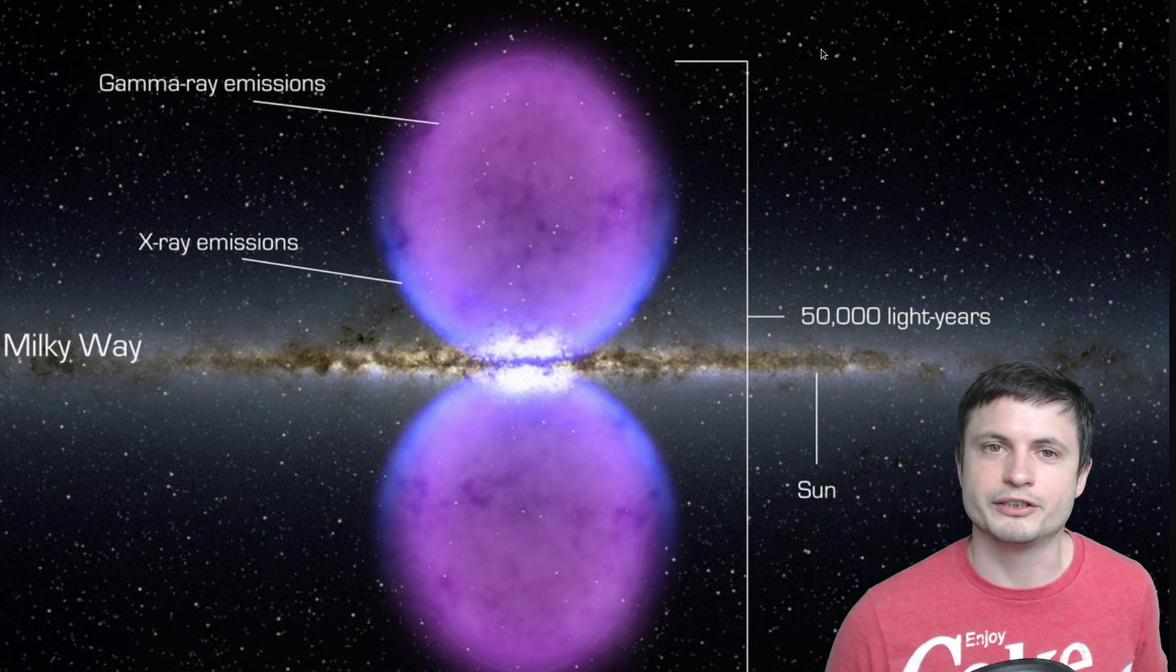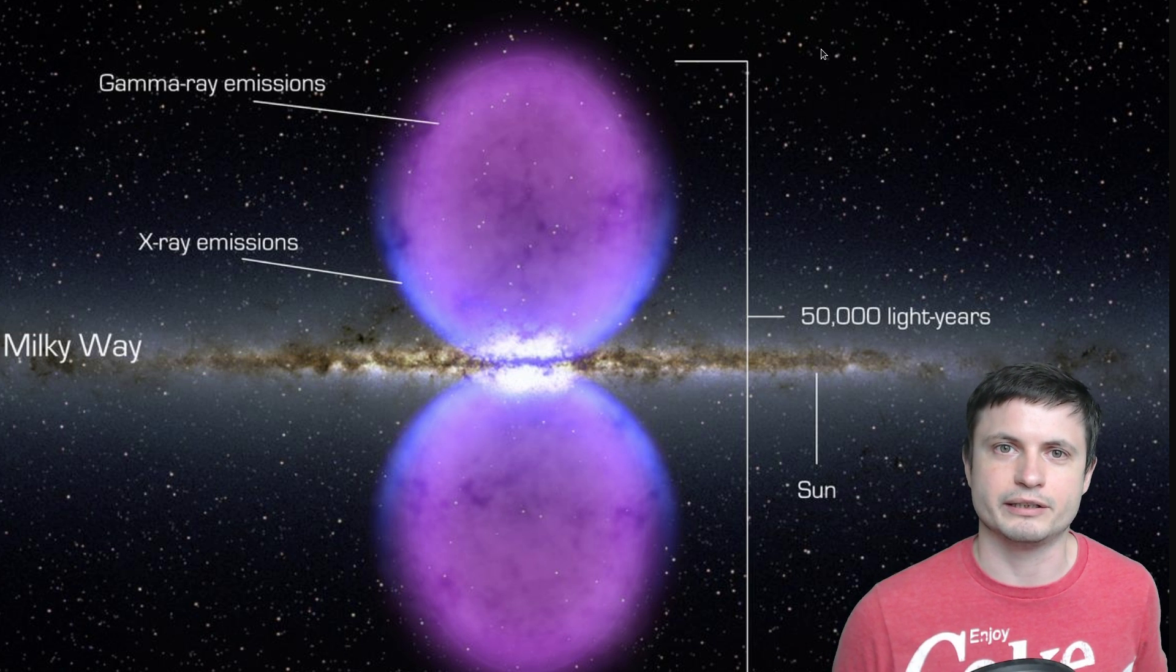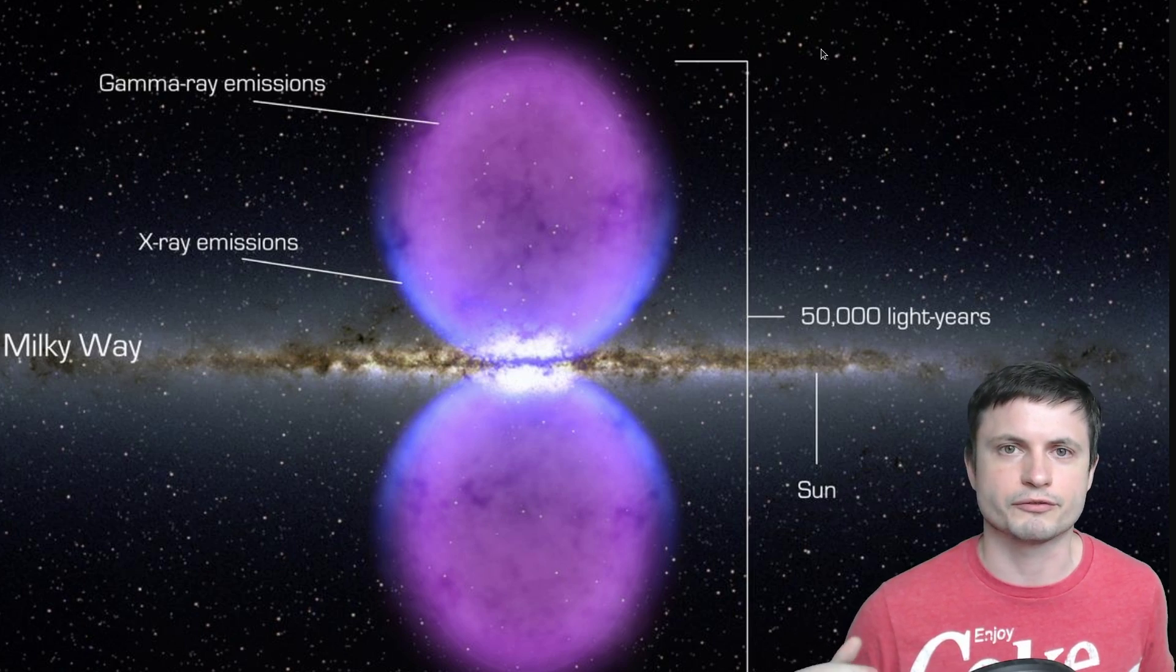And it just so happens that we have very unusual gamma ray emissions right here, and we can't seem to explain them. But don't get confused, this is not to say that this is definitely dark matter here, and that this is what's causing these unusual gamma rays. We still need to investigate these gamma rays in a little bit more detail, and compare them to the results from the other paper.